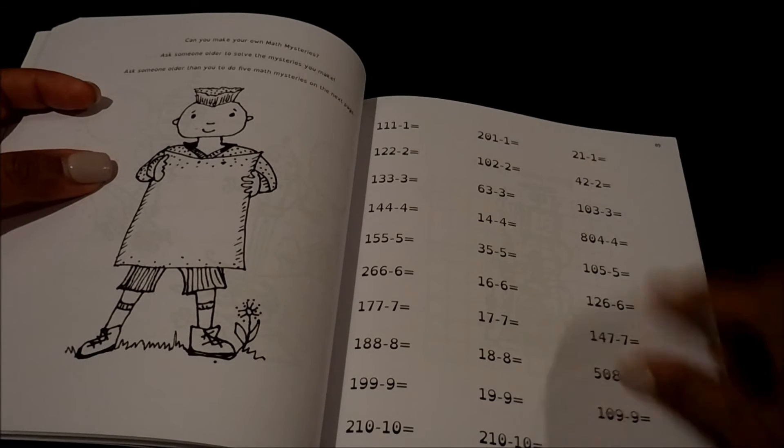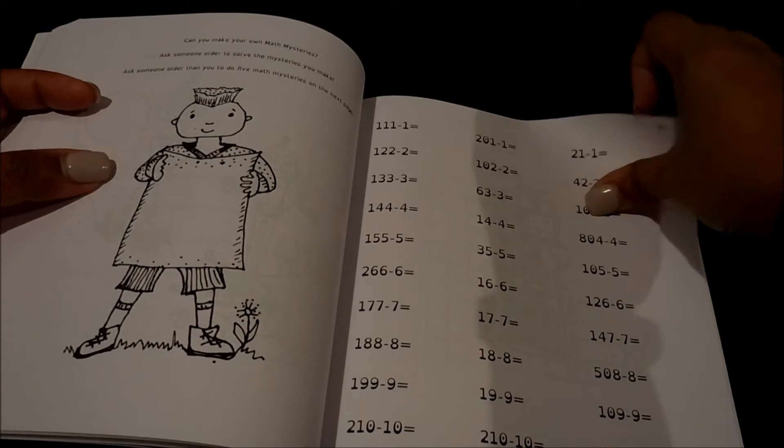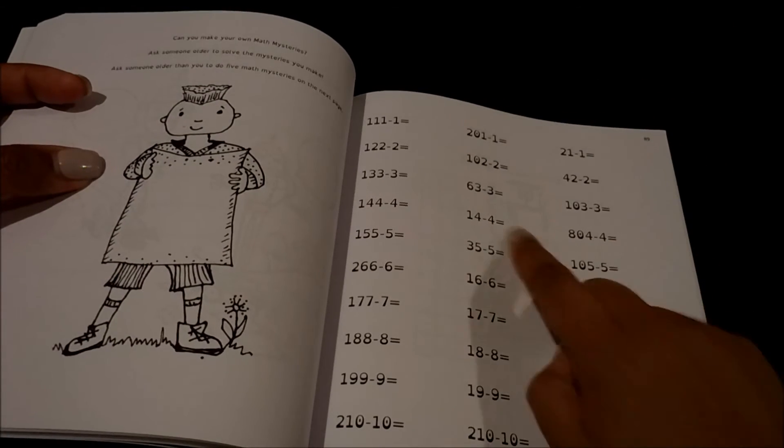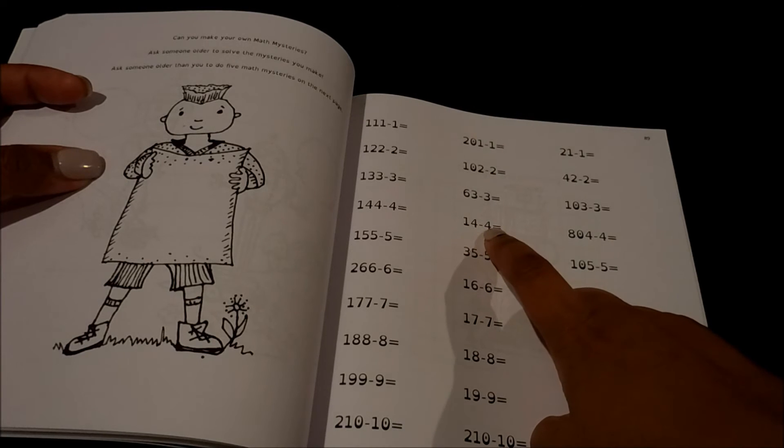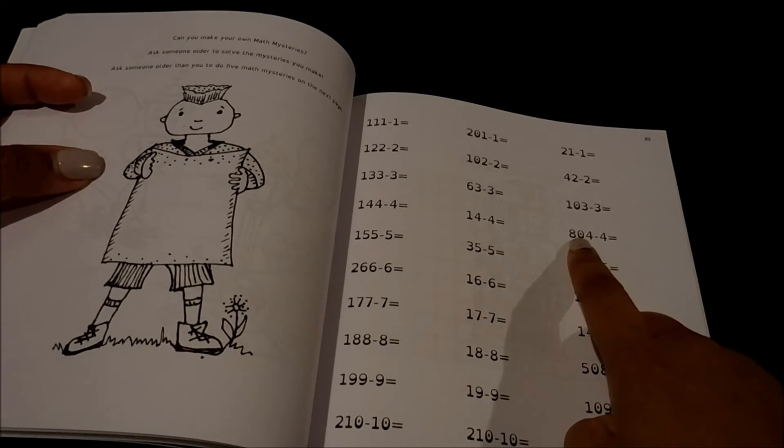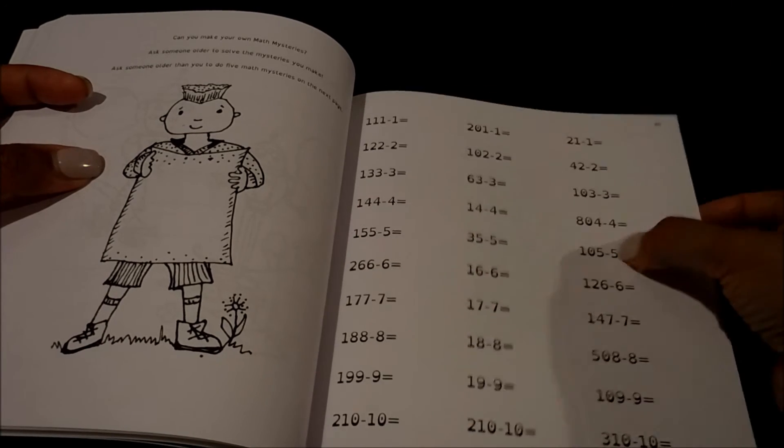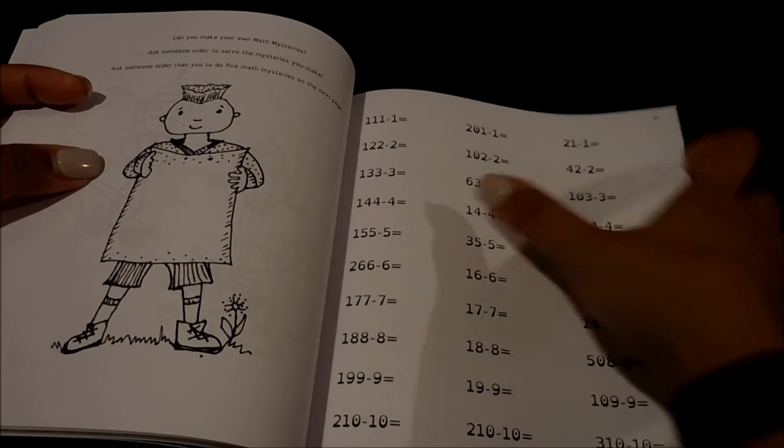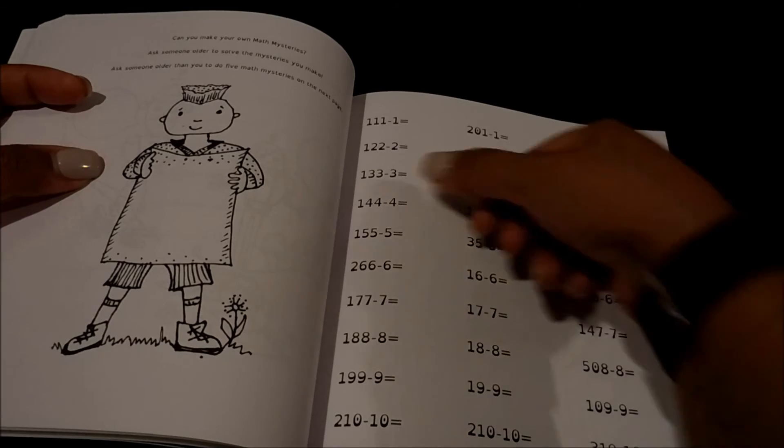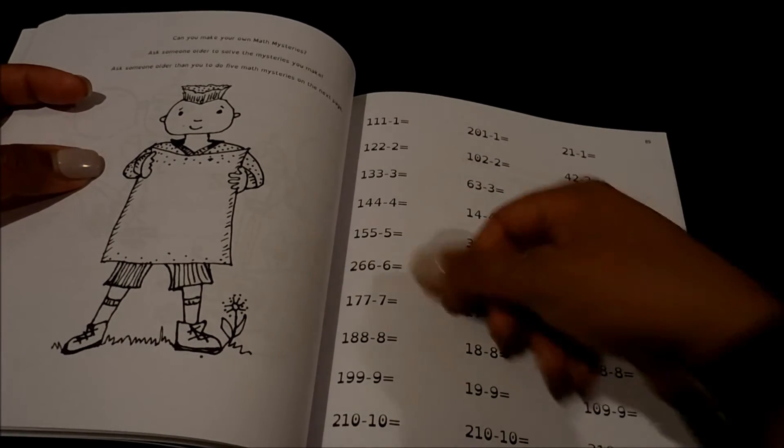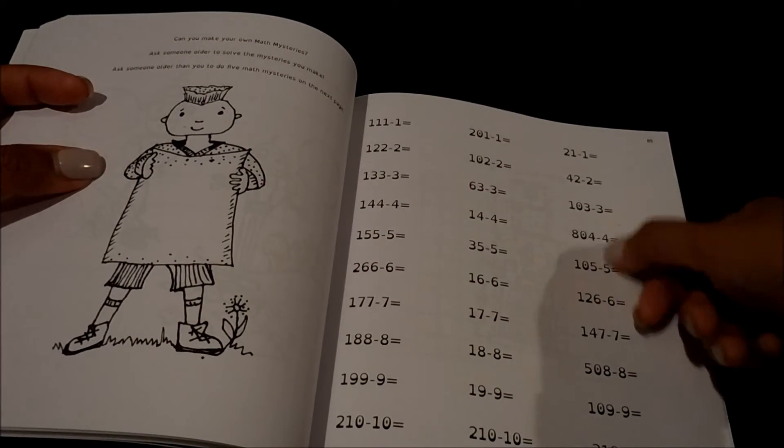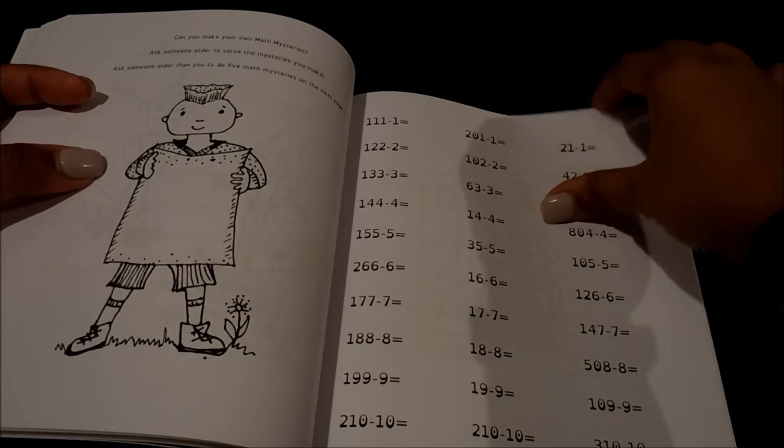So here we go into the three digit numbers and then, like you'll see, if you know 14 minus 4 is 10, then it's very easy. So it would be 804 minus 4 would be 800. So it kind of helps you, maps it out for you so they can learn, if they know a simpler one, they will know the bigger number.